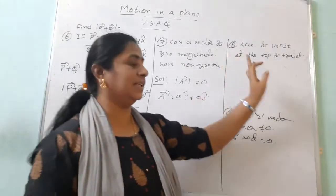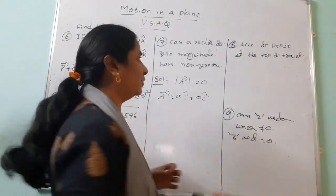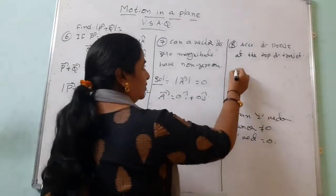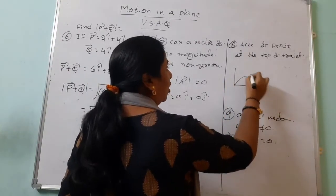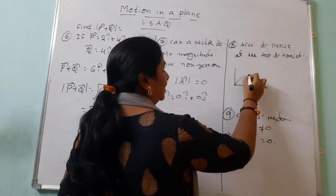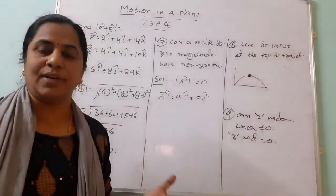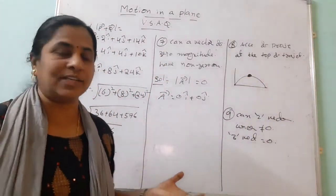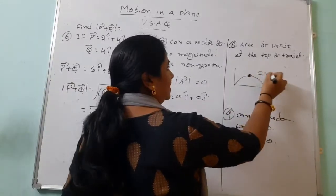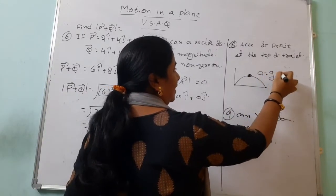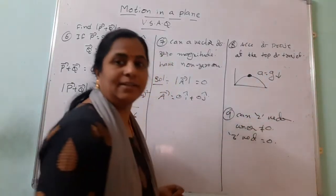The eighth question: in projectile motion, what is the acceleration at the top of the trajectory? Acceleration due to gravity always acts downwards with magnitude g, even at the highest point of the trajectory.